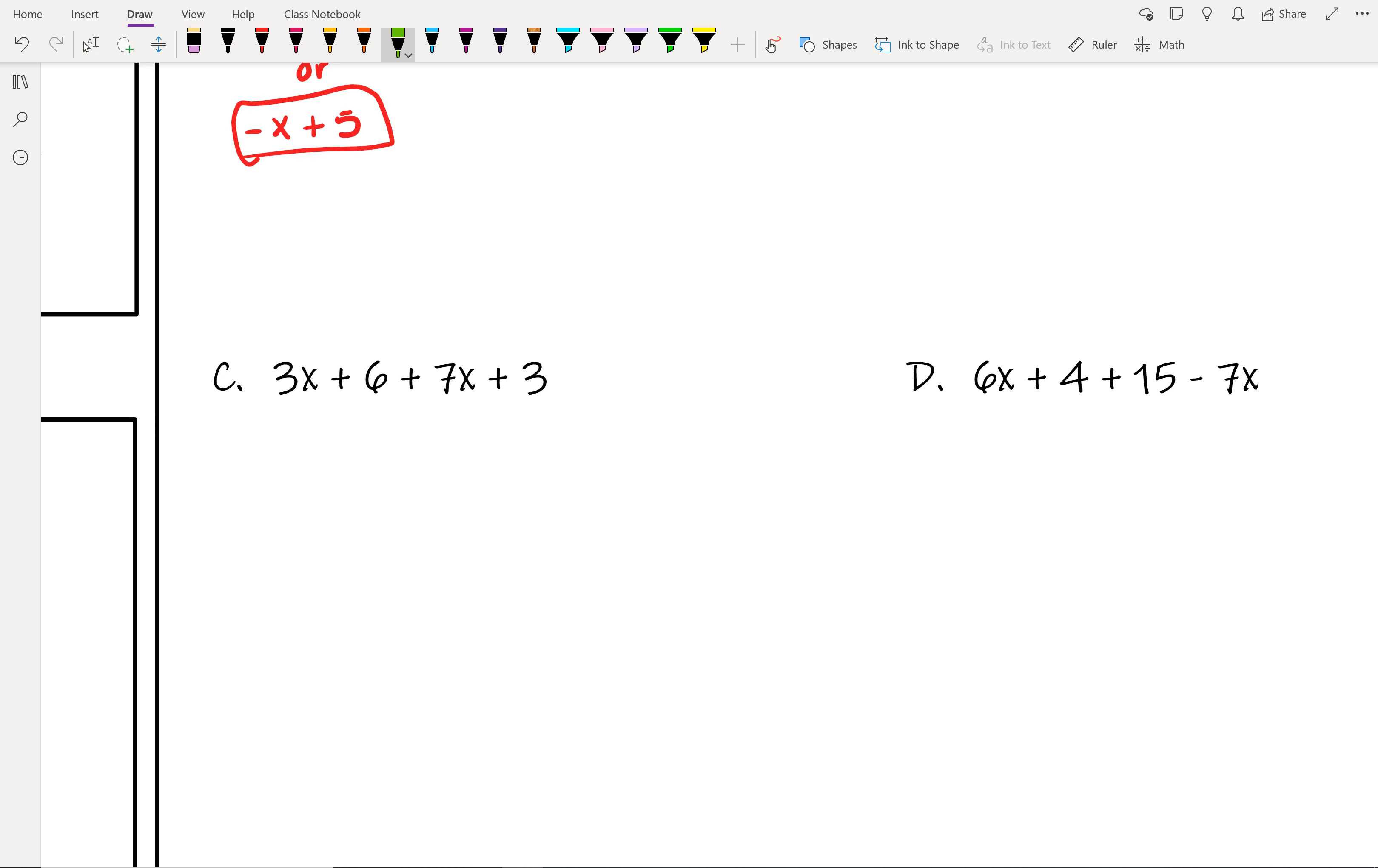Alright, so for example C, let's get you guys to try and work on this. So let's start by taking a look at what are our like terms here. So what are the sets of like terms that we have in this question. Alright, so we have 3x and 7x are a pair of like terms. And the 6 and the 3 are a pair of like terms.